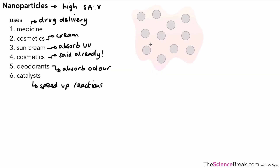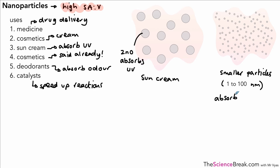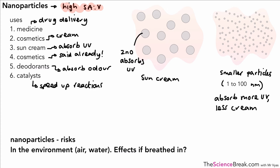A specific example of high surface area to volume ratio being useful is sun cream. The active ingredient is zinc oxide, which absorbs ultraviolet (UV) light that can be dangerous to skin. Nanoparticles of zinc oxide — in the range of 1 to 100 nanometers (10⁻⁹ to 10⁻⁷ meters) — have a very high SA:V ratio, allowing more UV to be absorbed, making the cream more effective and meaning less cream is needed to do a better job.